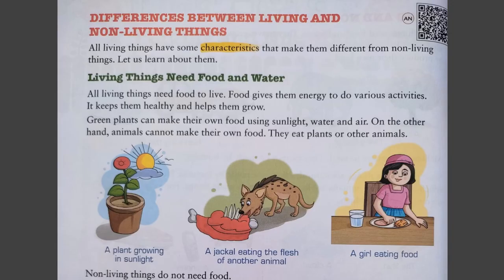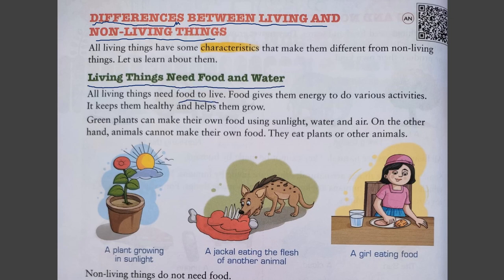Now let us see differences between living and non-living things. All living things have characteristics that make them different from non-living things. First: living things need food and water. All living things need food to live; food gives them energy to do various activities, keeps them healthy, and helps them grow. Green plants can make their own food using sunlight, water, and air.